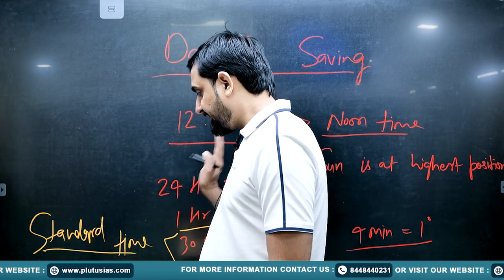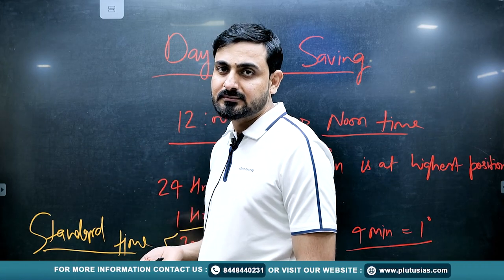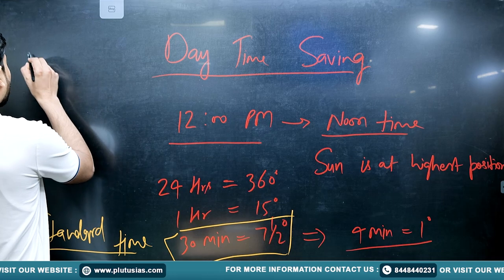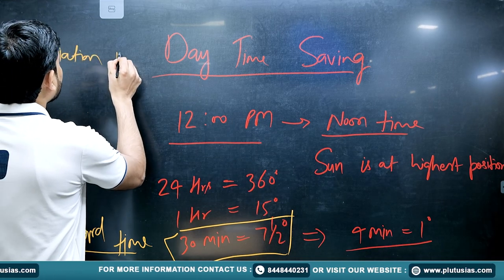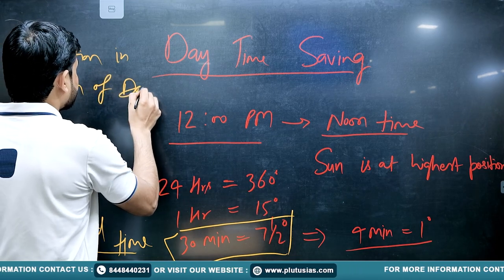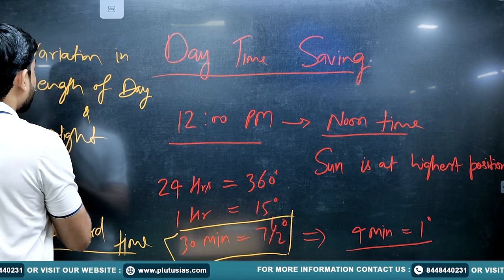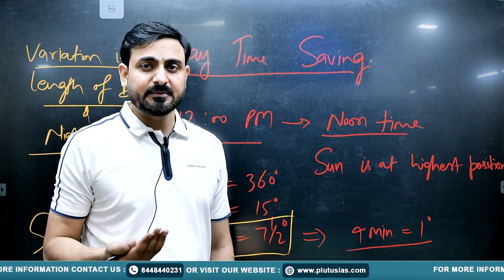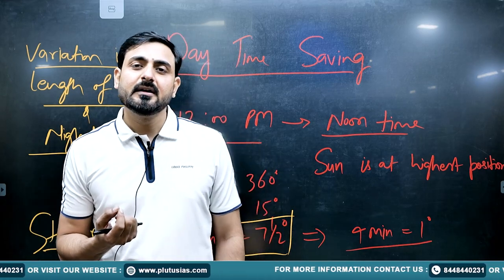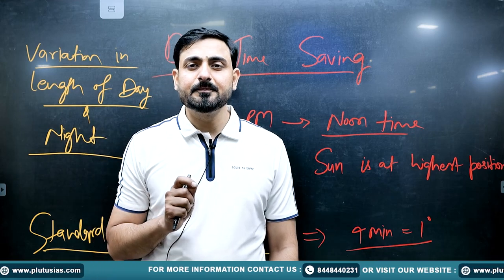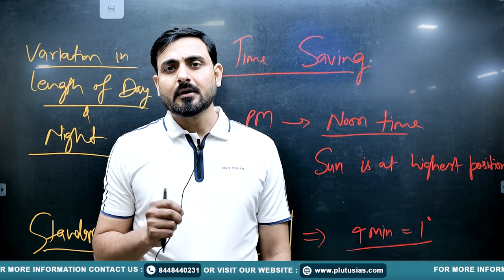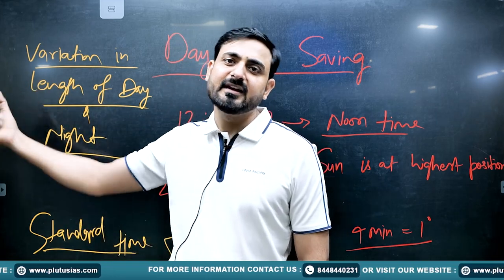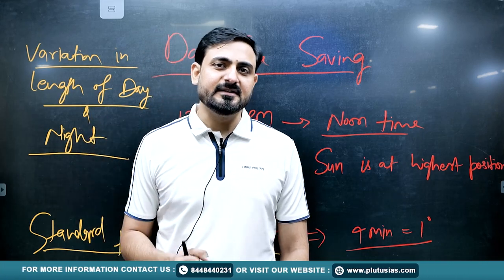This rise and set does not occur across all latitudes at the same time. Variation in the length of day and night is generally experienced more towards the polar region and less towards the equatorial region. Consider equatorial regions like Indonesia, Tropic of Cancer regions like India, or high-latitude regions like Siberia or the Arctic — where will the maximum variation in day and night length be? The answer is the Arctic region.